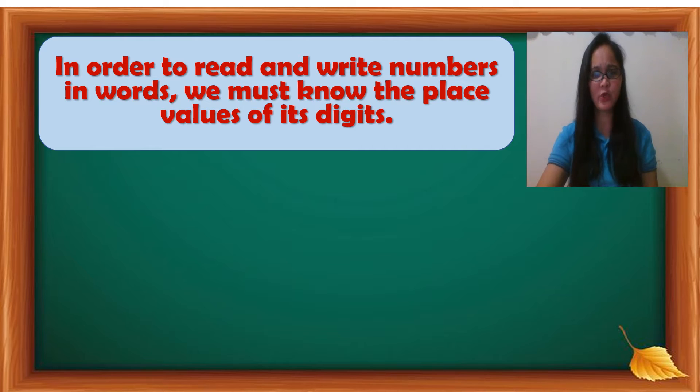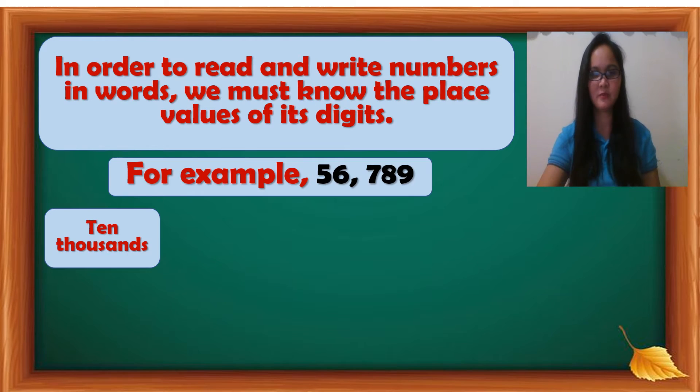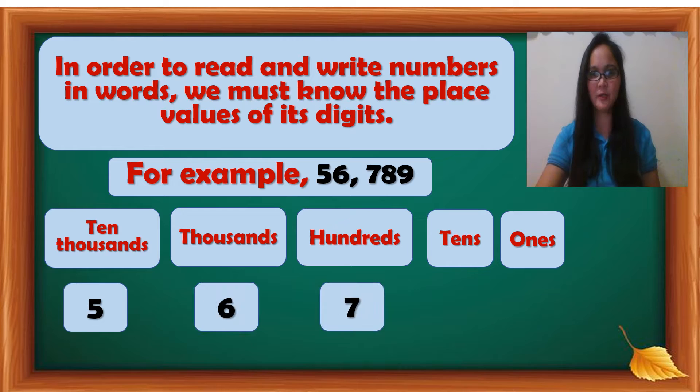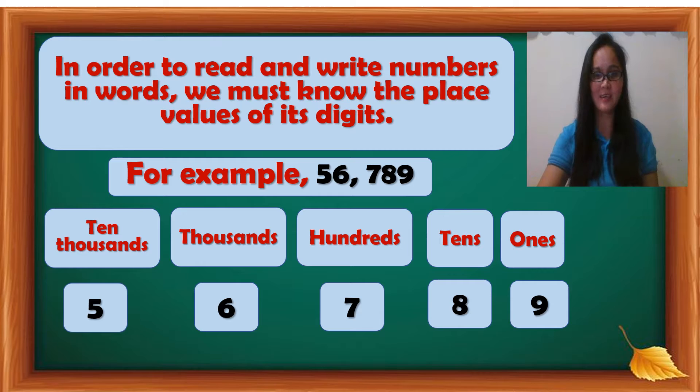In order to read and write numbers in words, we must know the place values of its digits. For example, 56,789. So we have 10,000, thousands, hundreds, tens, ones - the place value of each digit.